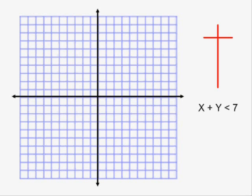To shade an inequality, I start by graphing the line. In this example, x plus y is less than 7 is the inequality I'm working with.